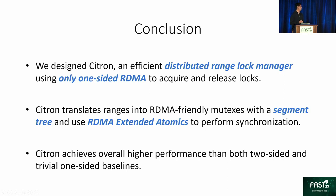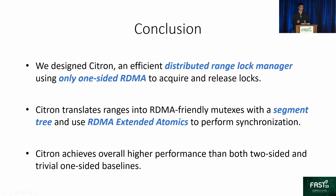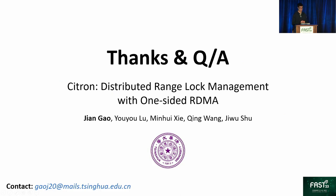In conclusion, we designed Citron, a distributed range-lock manager using only one-sided RDMA to acquire and release locks. Citron translates ranges into RDMA-friendly mutexes with a segment tree and uses RDMA extended atomics for synchronization. Citron achieves overall higher performance than two-sided and existing one-sided trivial baselines. Thank you for listening — I'm open to questions.